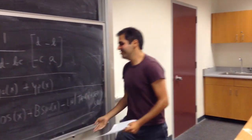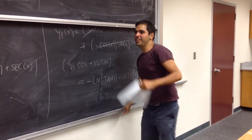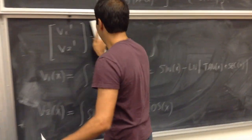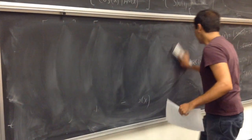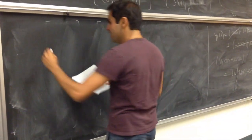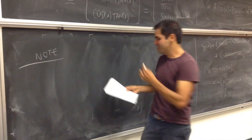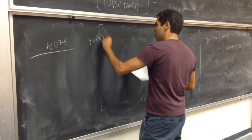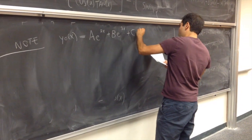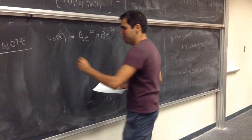You might object: why use this linear algebra technique when you could just memorize a calculus formula? Well, it turns out you can easily generalize this to higher-order equations — and also systems. Suppose you have a differential equation whose homogeneous solution is a·e^(2x) + b·e^(3x) + c·e^(4x).